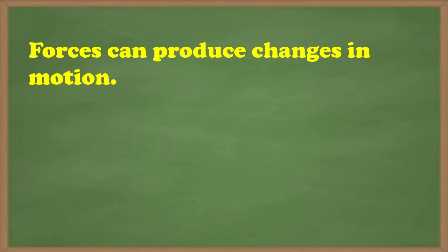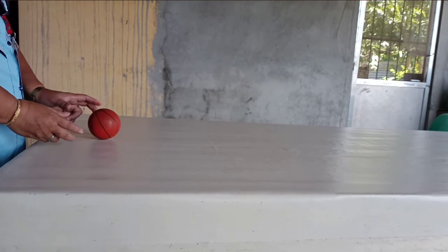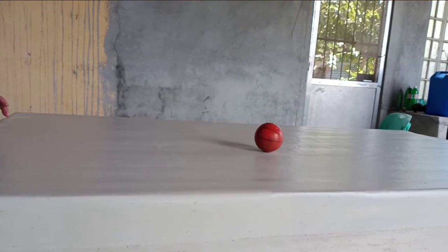Forces can produce changes in motion. Let's discuss this through the observable effect of the force on a ball. Number one, you push the ball and it will move or roll across the surface of the table.